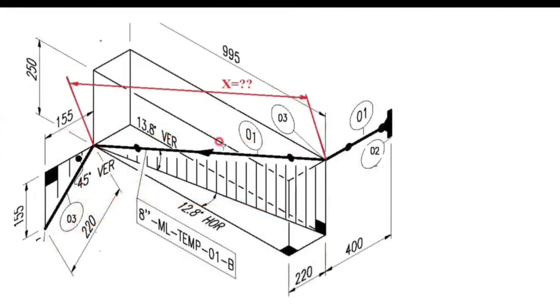Let's calculate this dimension, which is indicated by the red line in the pipe drawing. That is, we will calculate the distance from the center of the elbow to the center of the elbow. This line is a diagonal of a parallelepiped.